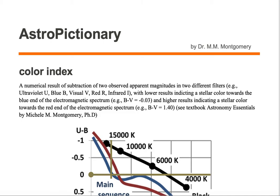Lower results indicate a stellar color towards the blue end of the electromagnetic spectrum, for example B minus V equals minus 0.03, and higher results indicate a stellar color towards the red end, for example B minus V equals 1.40.